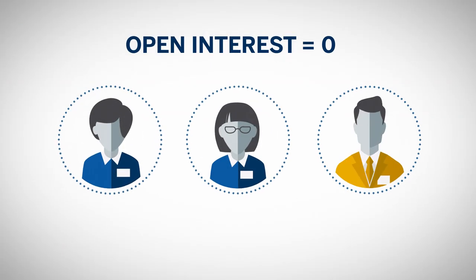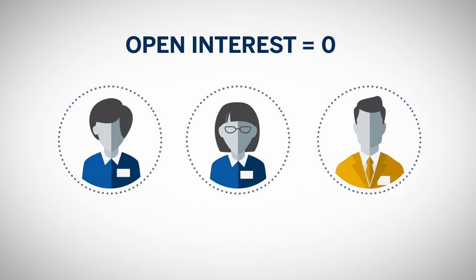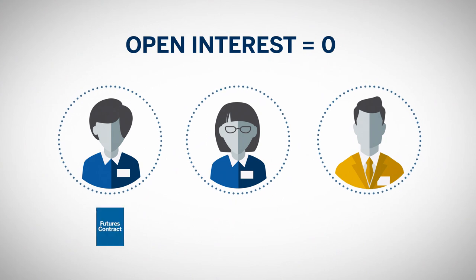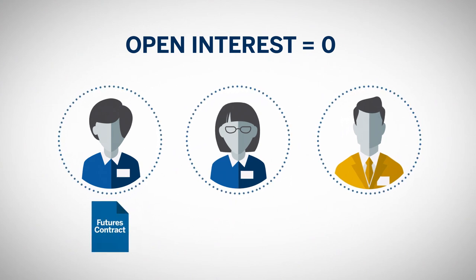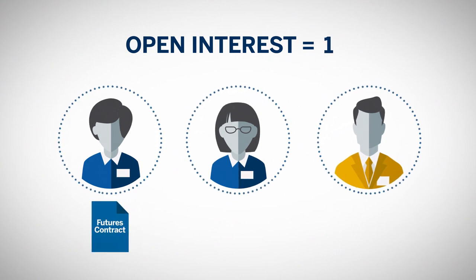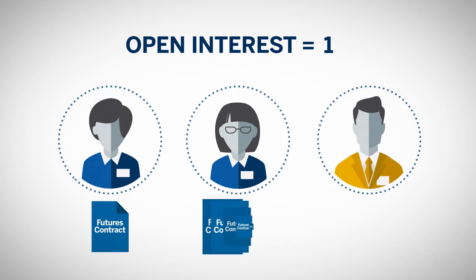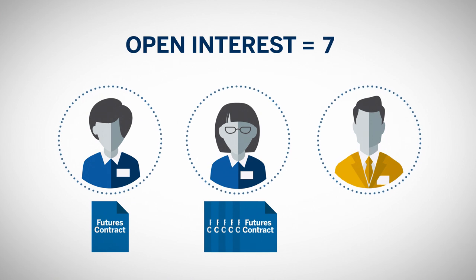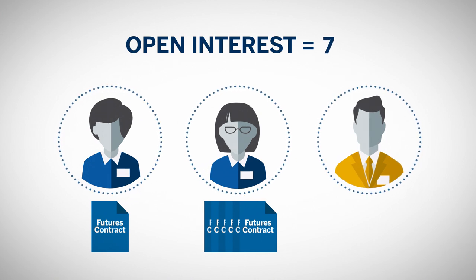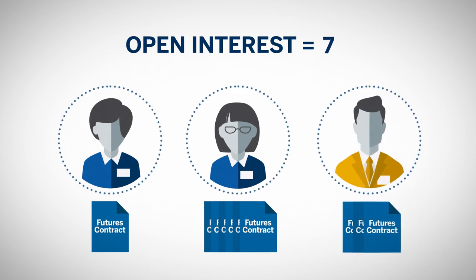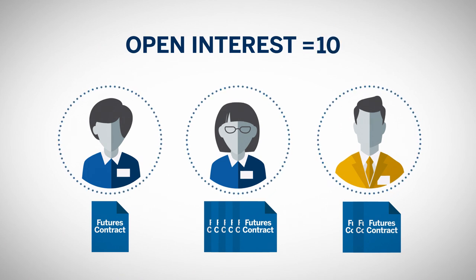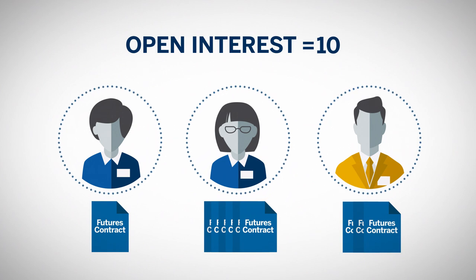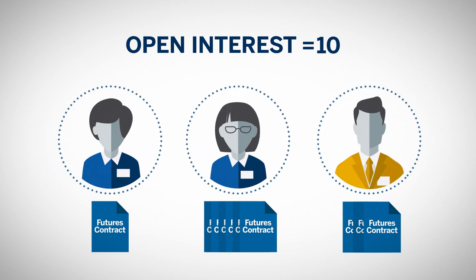For example, Sharon, Cynthia, and Kurt are three traders trading the same futures contract. If Sharon buys one contract to enter a long trade, open interest increases by one. Cynthia also goes long and buys six contracts, thereby increasing open interest to seven. If Kurt decides to short the market and sells three contracts, open interest again increases to ten. Open interest would remain at ten until the traders exit their positions, at which point open interest declines.